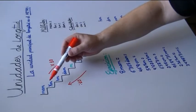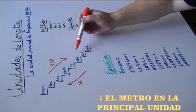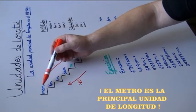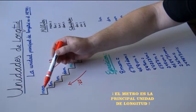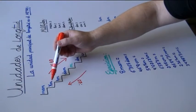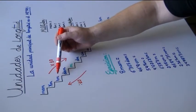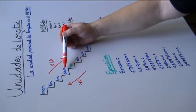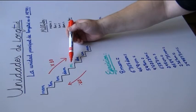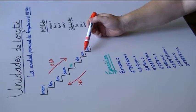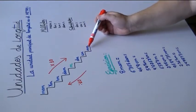En esta escalera he representado las principales medidas de longitud. Comenzando por el miriámetro con símbolo MAM, kilómetro símbolo KM, hectómetro símbolo HM, decámetro símbolo DAM, metro símbolo M, decímetro símbolo DM, centímetro símbolo CM, y milímetro símbolo MM.